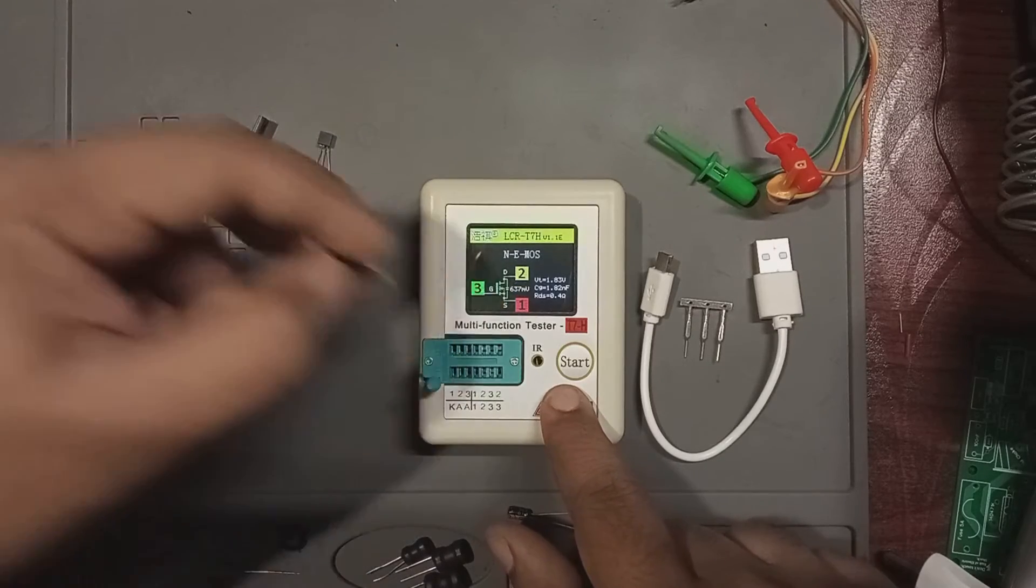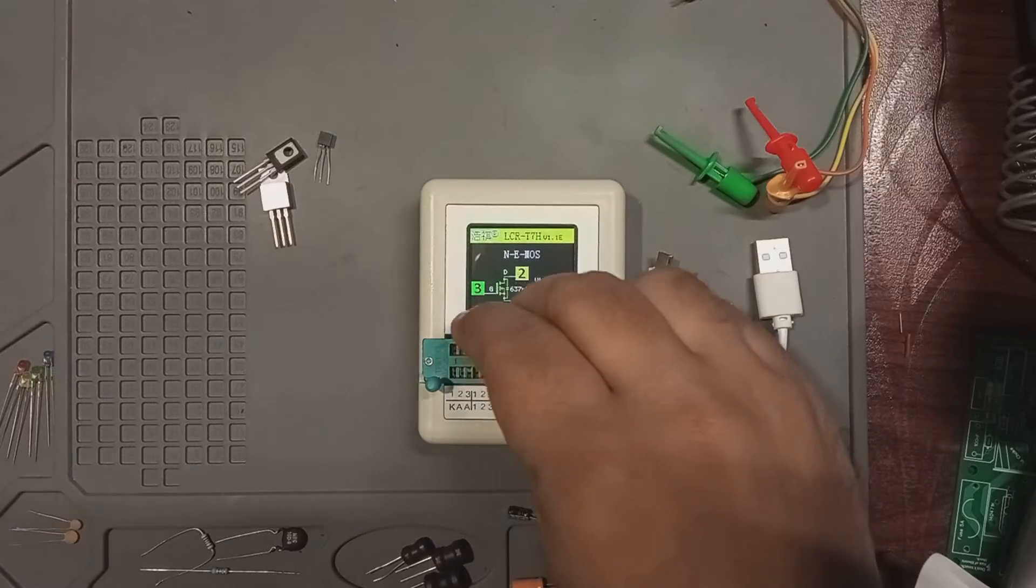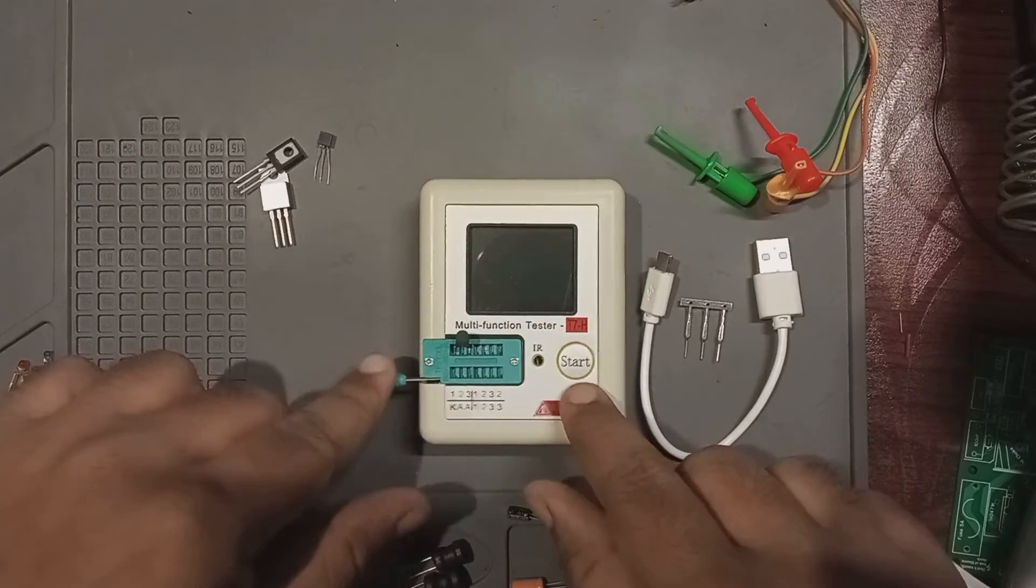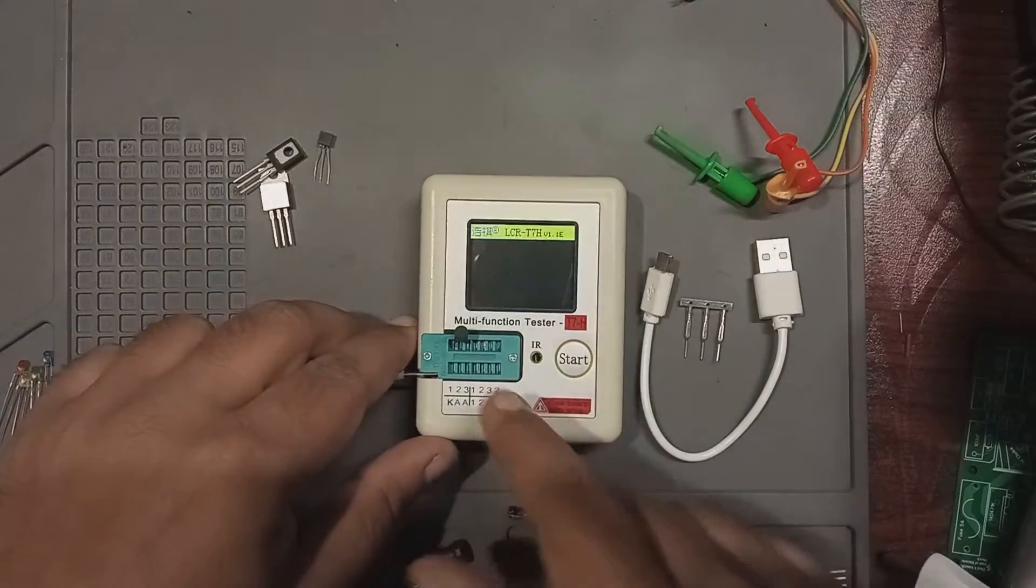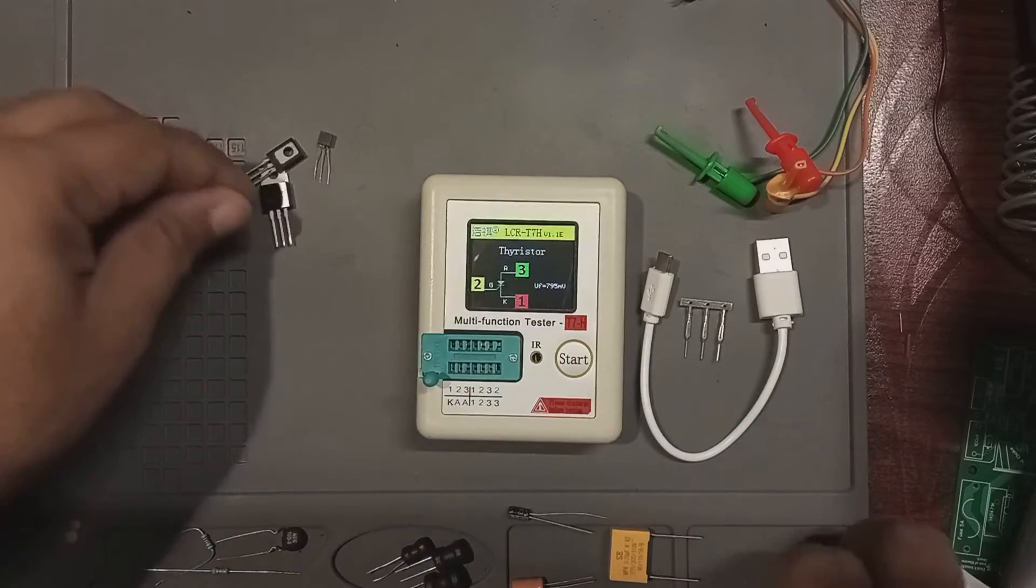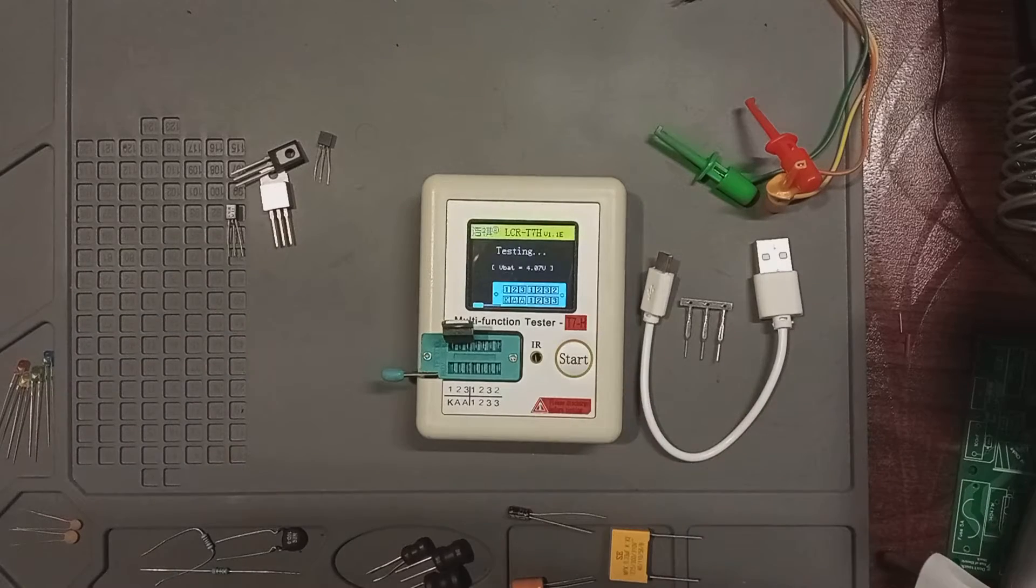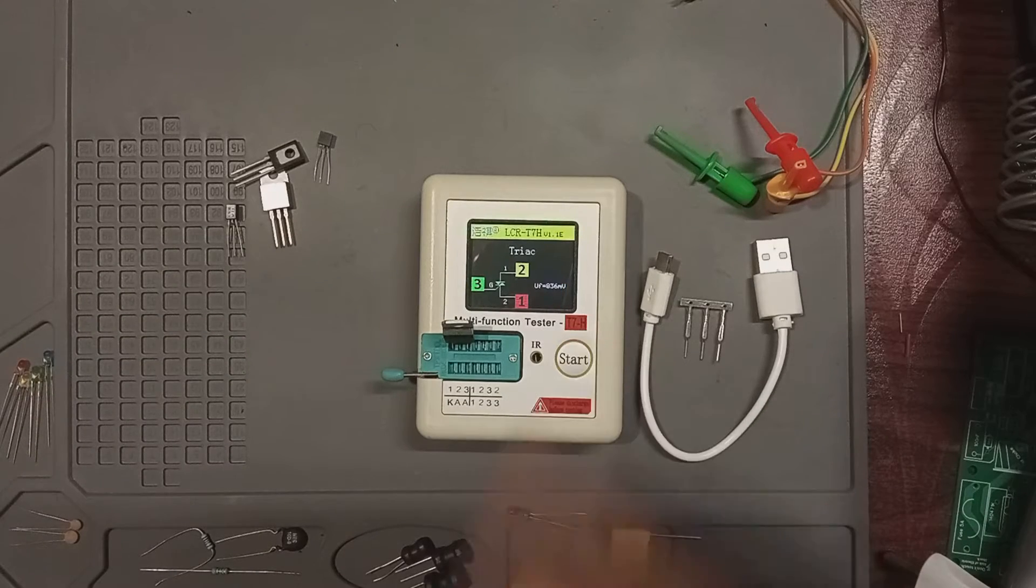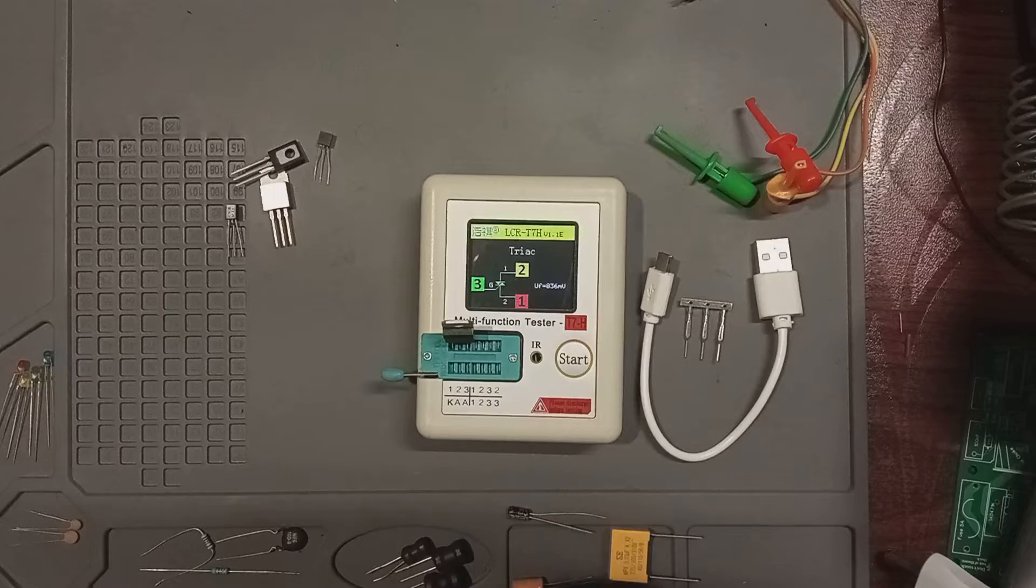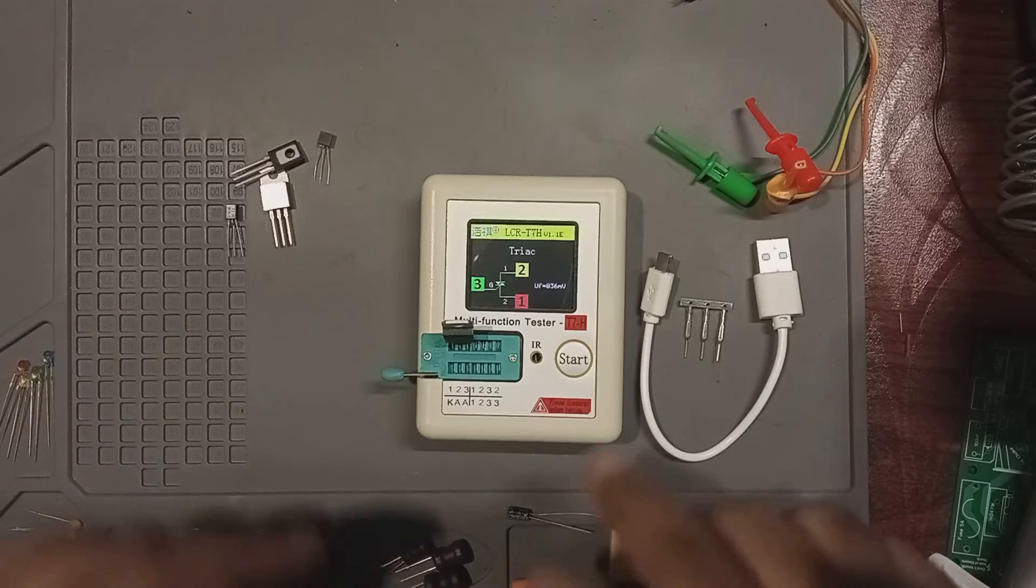Next, we will test another thyristor. This has a TO92 package, resembling a transistor. The meter detects it with precision. Now, on a triac. Let's see the reading. The meter identifies it as a triac with an 836 millivolt forward voltage drop.